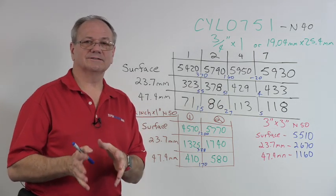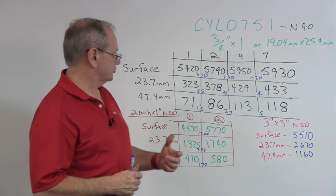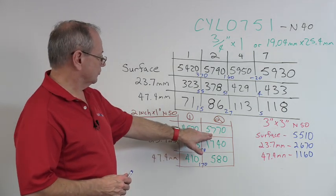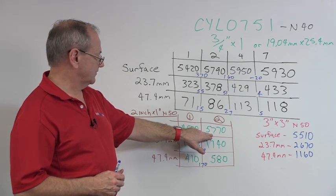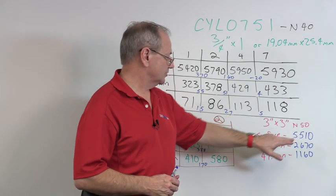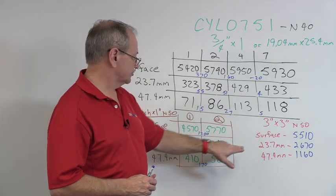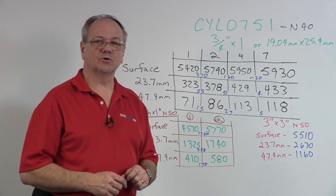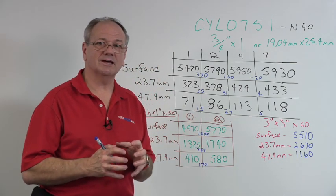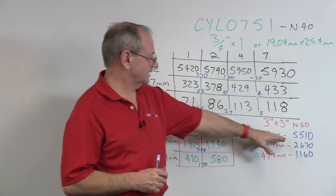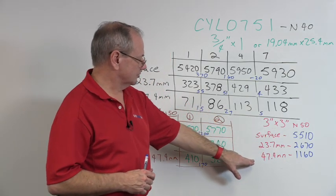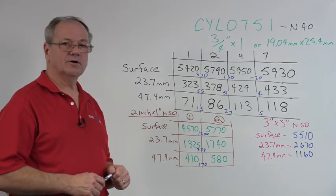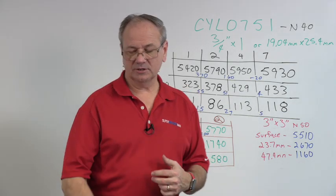The big magnet, three inches in diameter and three inches thick, starts at 5510 on the surface. At 23 millimeter distance, this one is 2670 gauss. The magnetic mass is so much more that it is able to maintain that field over a greater distance. At 47.4 distance we're at 1160 gauss, which is double what we were getting with the two by two.